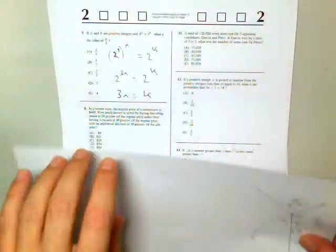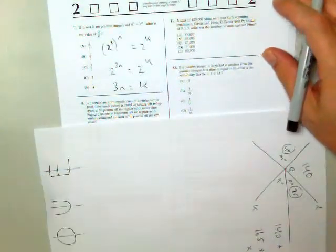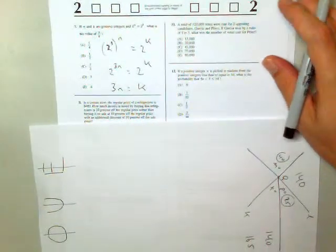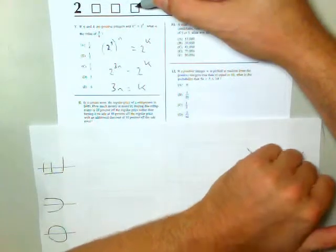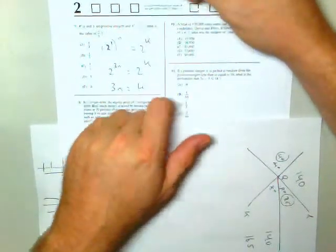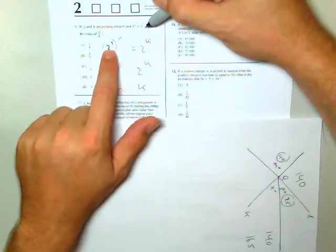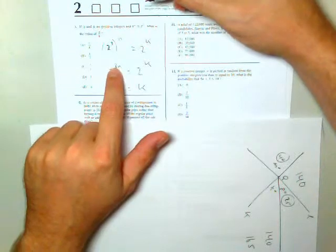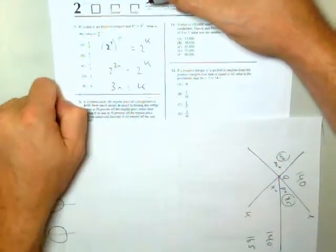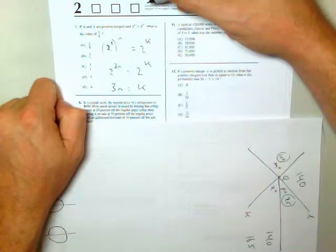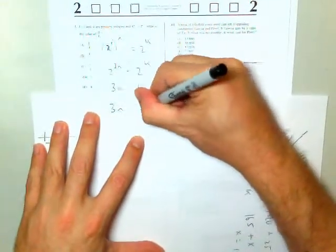If n and k are positive integers, and 8 to the n equals 2 to the k, what is the value of n divided by k? Well, it has one equation with two variables, but we can still solve it. What we're going to do is we're going to take 8, and we're going to write it as 2 cubed. 2 cubed to the n equals 2 to the k. The power raised to the power is multiplication. 2 to the 3n equals 2 to the k. Because my bases are the same, I can set my exponents equal to each other. 3n equals k, and what it wants, I'm going to rewrite that. 3n equals k. It wants n over k.